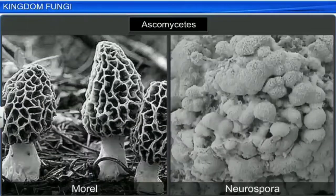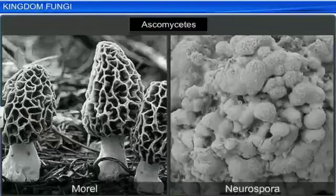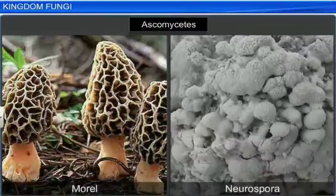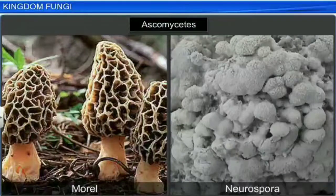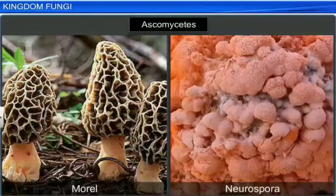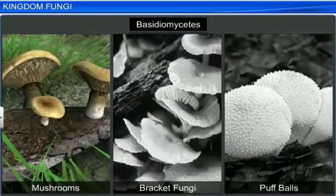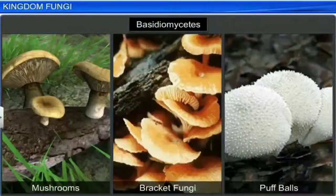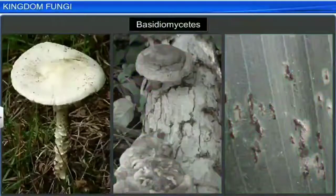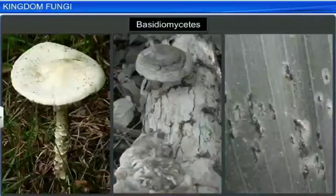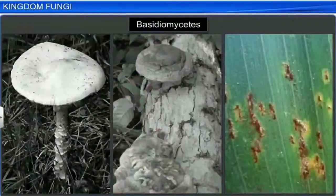Some members of Ascomycetes like Morels are edible, while others like Neurospora are used in biochemical studies. Some common examples of Basidiomycetes are mushrooms, bracket fungi, and puff balls. They grow in soil, on logs, and inside plant bodies as parasites such as rust and smut.